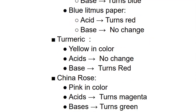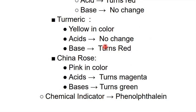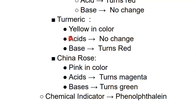Turmeric is another natural indicator, yellow in color. It is best used as a turmeric solution or as turmeric paper made by applying a paste onto filter paper. With acids, turmeric shows no change, but with bases it turns red.